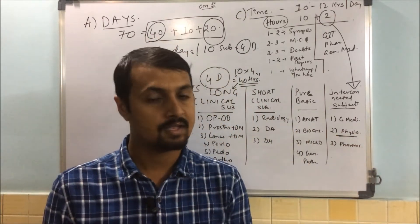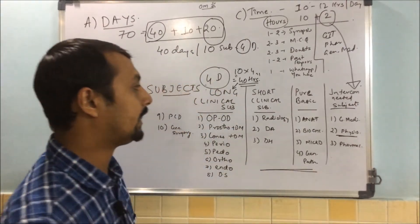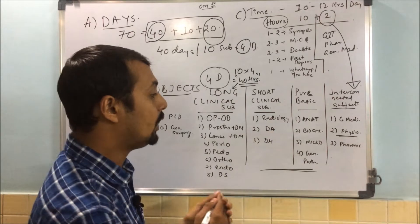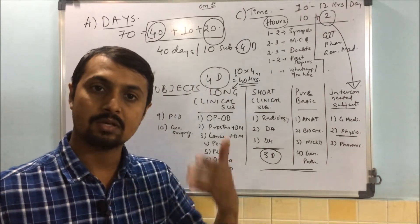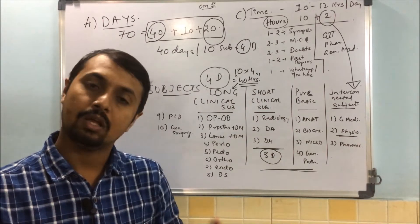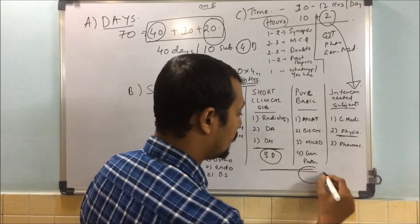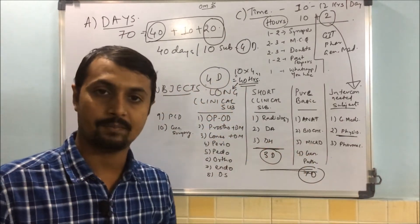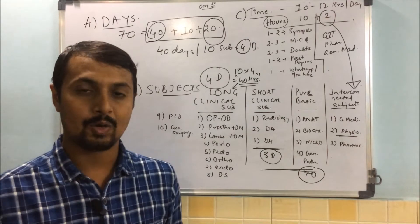Now we'll talk about the 10 days for your short clinical subjects and pure basics. I can assure you that radiology, DA, and DH you can complete within three days, not more than that. Same preparation: synopsis, notes, then MCQs. The remaining seven days you have to give for pure basic subjects like anatomy, biochemistry, microbiology, and general pathology. Each subject you can complete within two days, and one day you can give for general pathology.